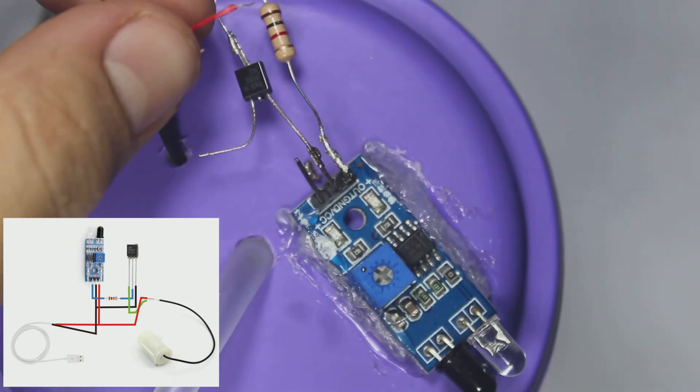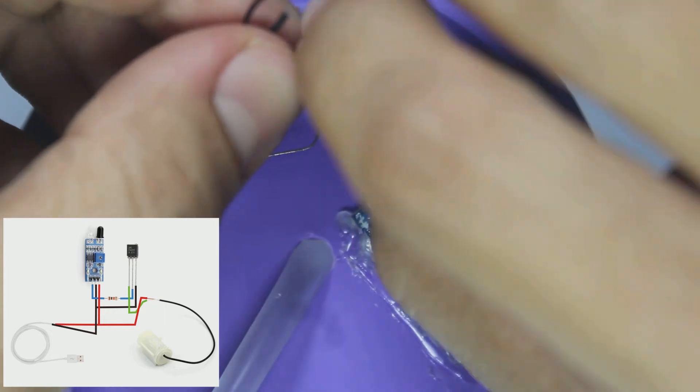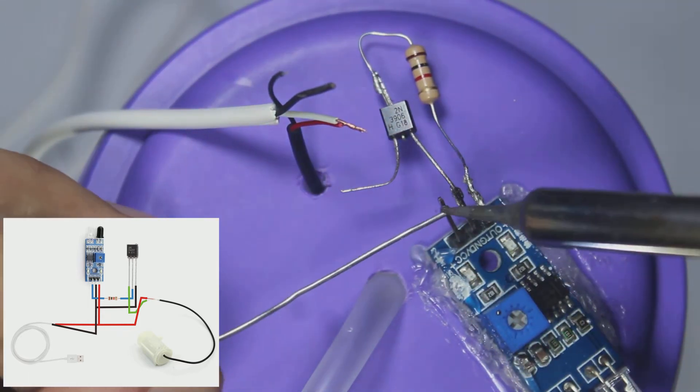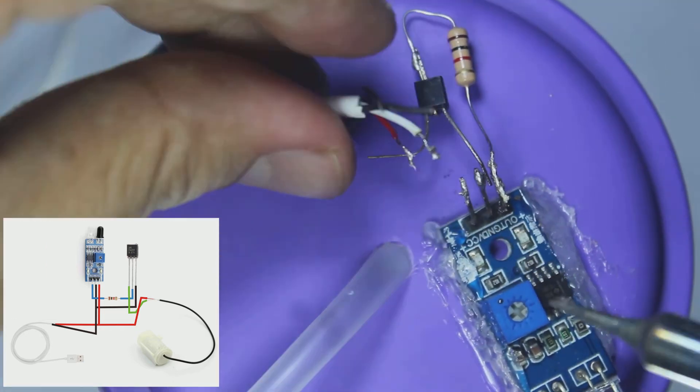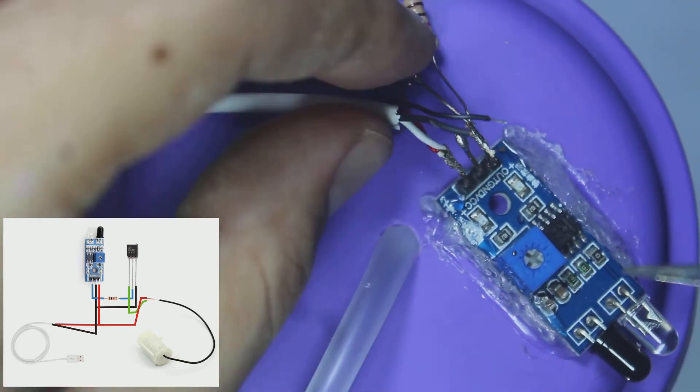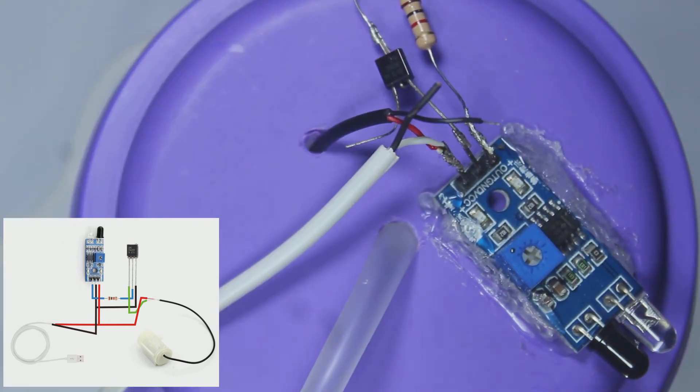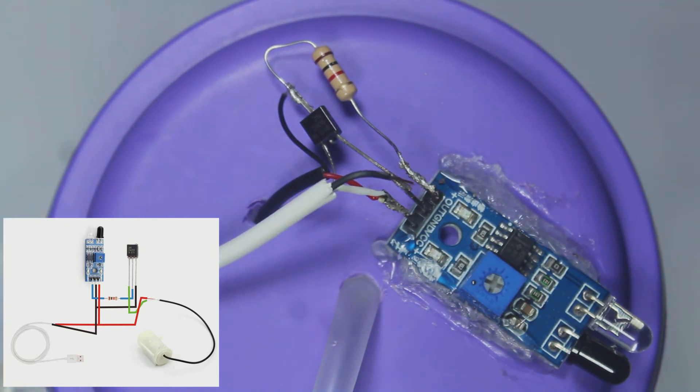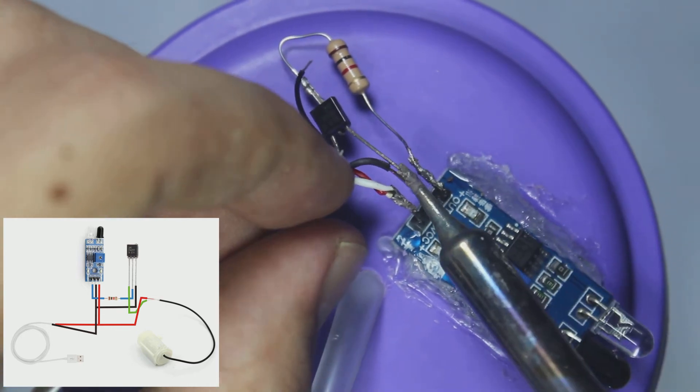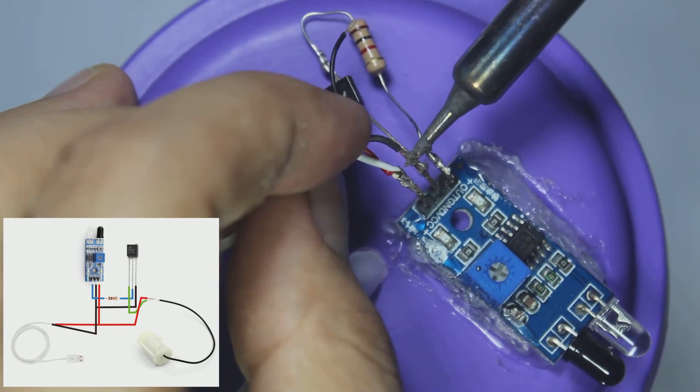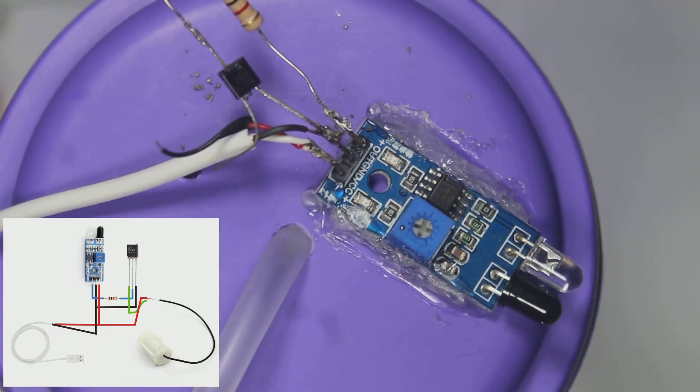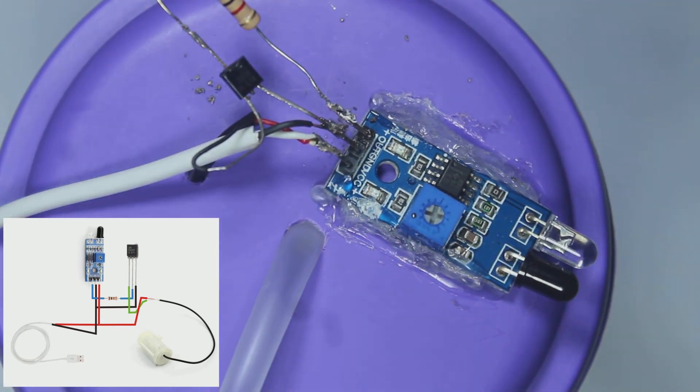Solder the positive from USB cable and DC pump positive together to the VCC pin of sensor module. Solder ground from USB cable to ground pin of sensor module. And then solder the negative DC pump cable, or the black one, to the collector of transistor.